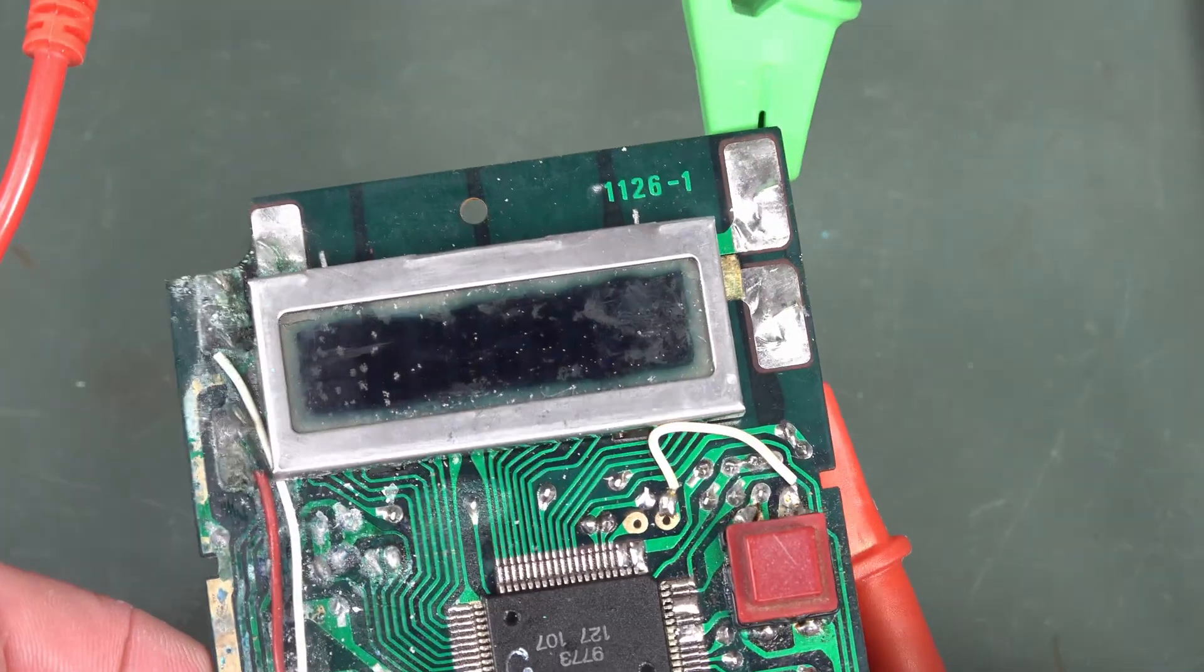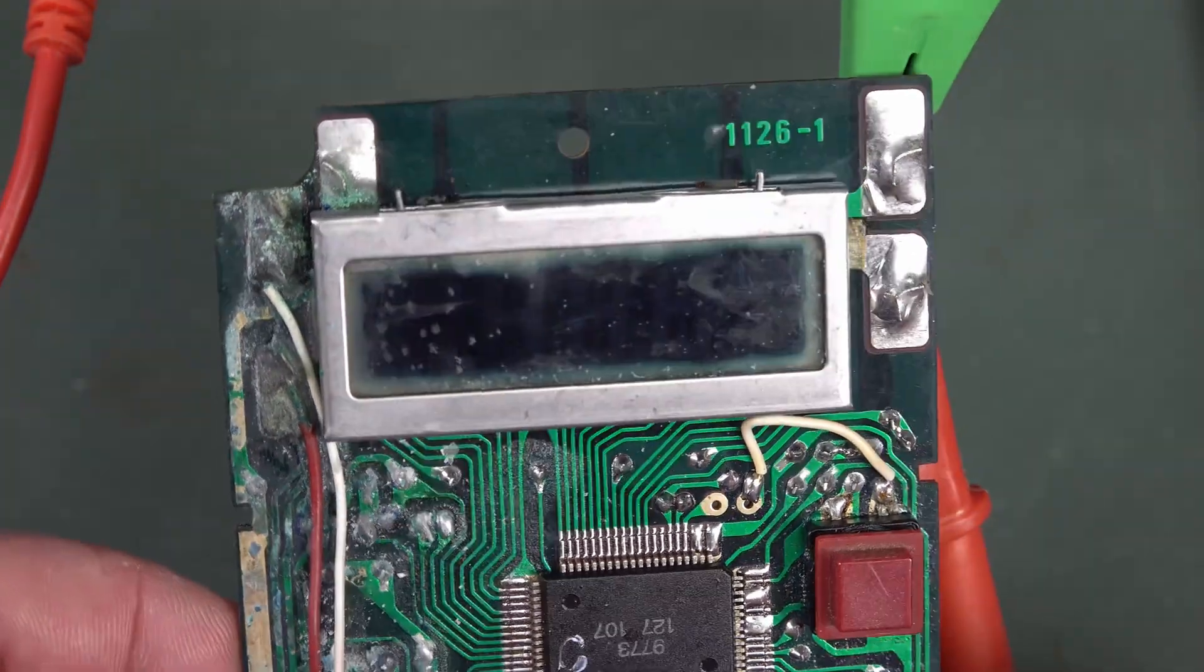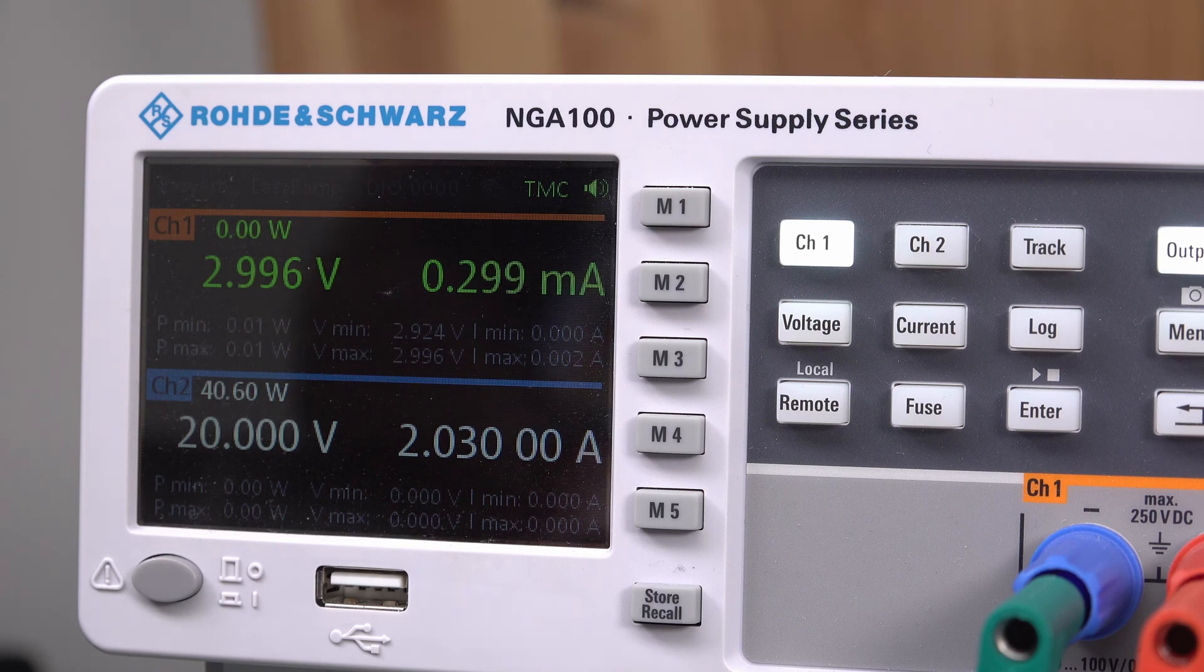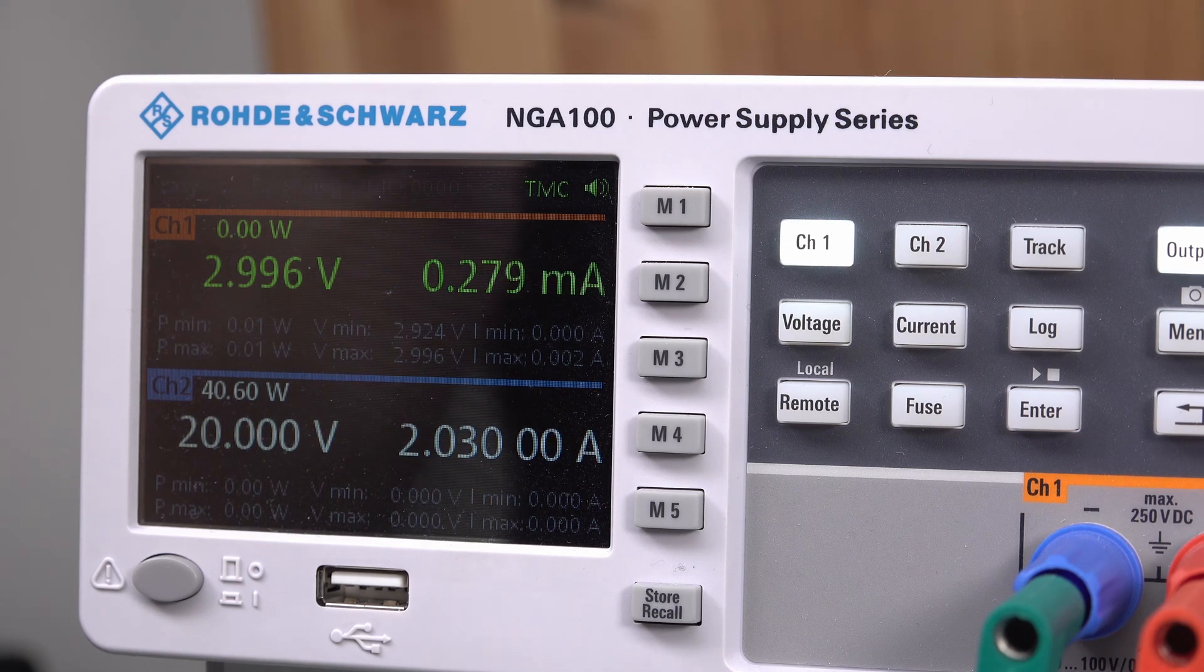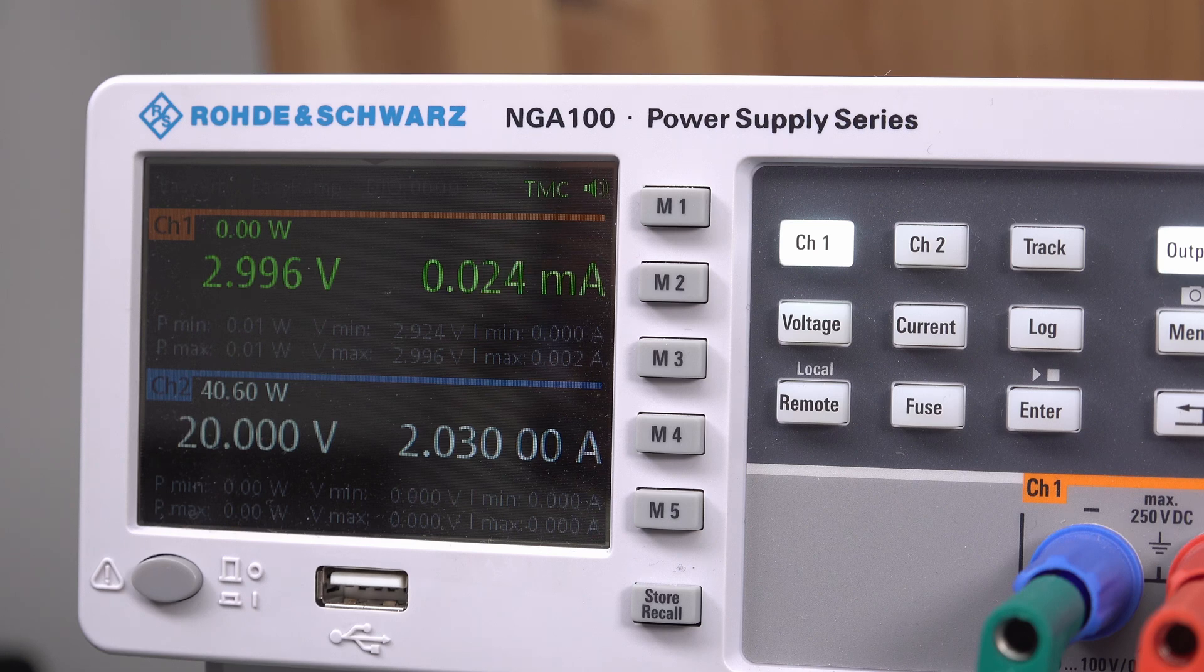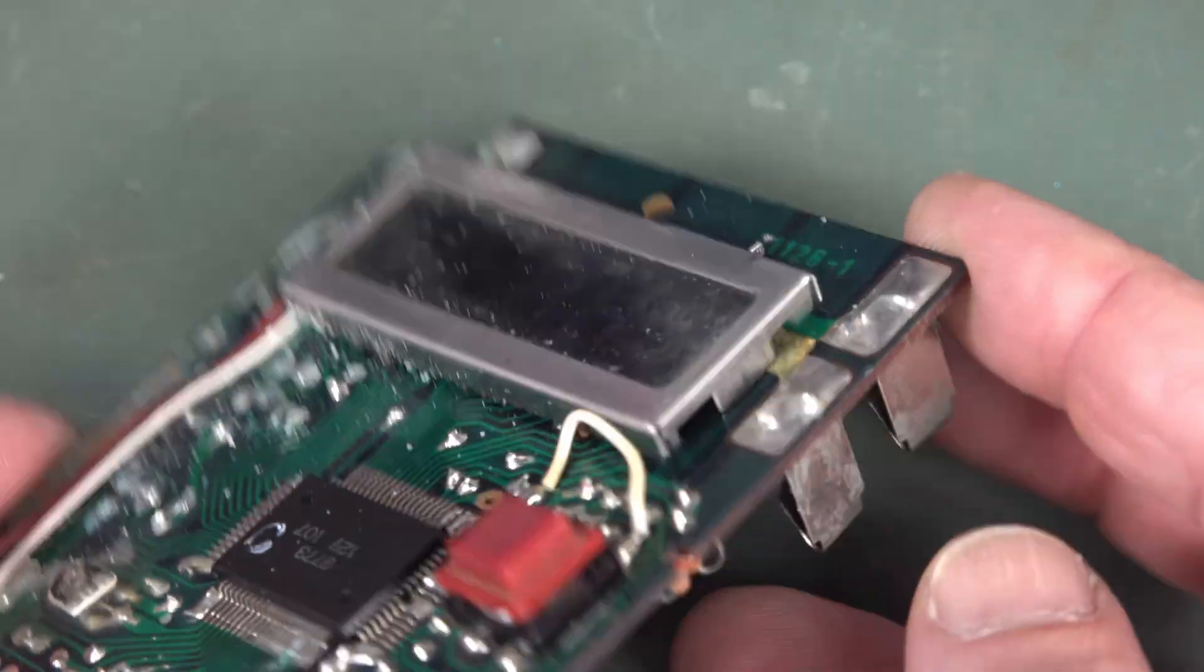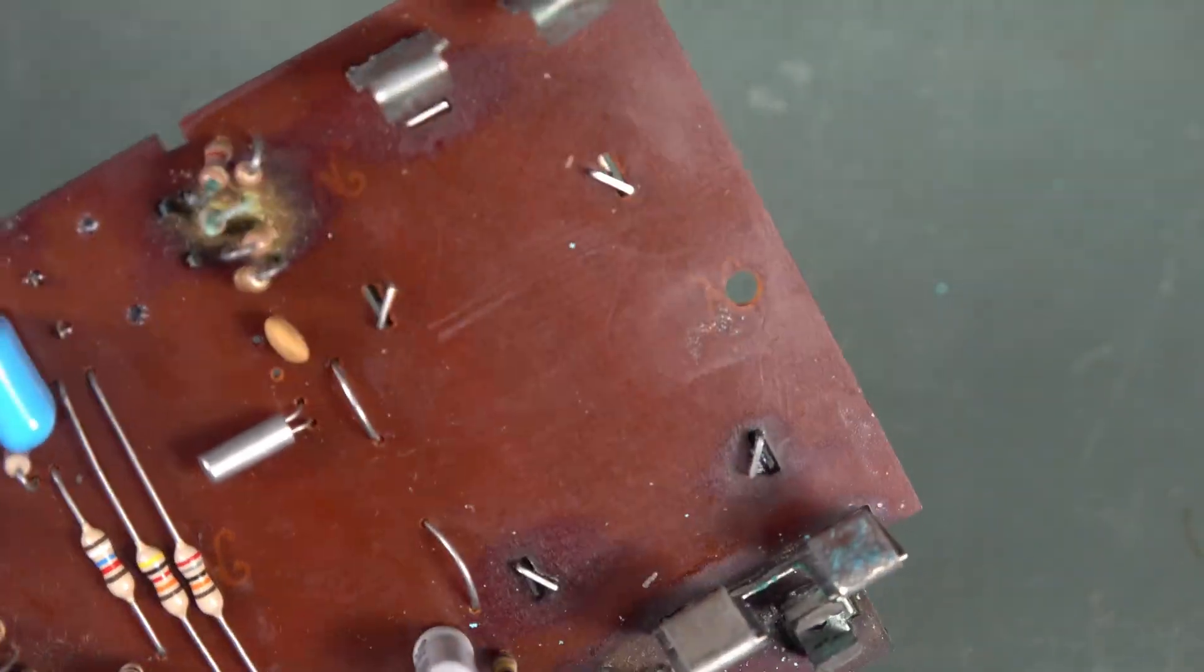If I power it up, unfortunately, nothing. As you'd expect, not a sausage. And it is drawing 0.3 milliamps, which at 3 volts is just under a milliwatt. So much for the 5 milliwatts. I don't know, let me change range. No, 0.3, same on all of them. And that's off. So let's take the LCD off here. It's just got four clips at the back. There's gonna be a zebra strip under there, and Bob's your uncle.